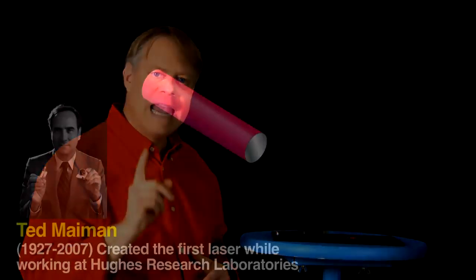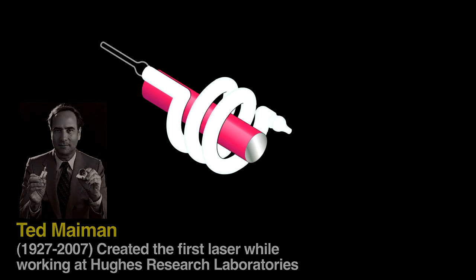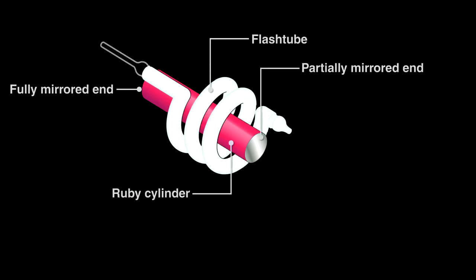In 1960, Ted Maiman demonstrated the first laser by taking a cylinder of ruby and surrounding it with a xenon arc flash lamp used in aerial photography. An intense burst of light from the lamp initiates lasing.